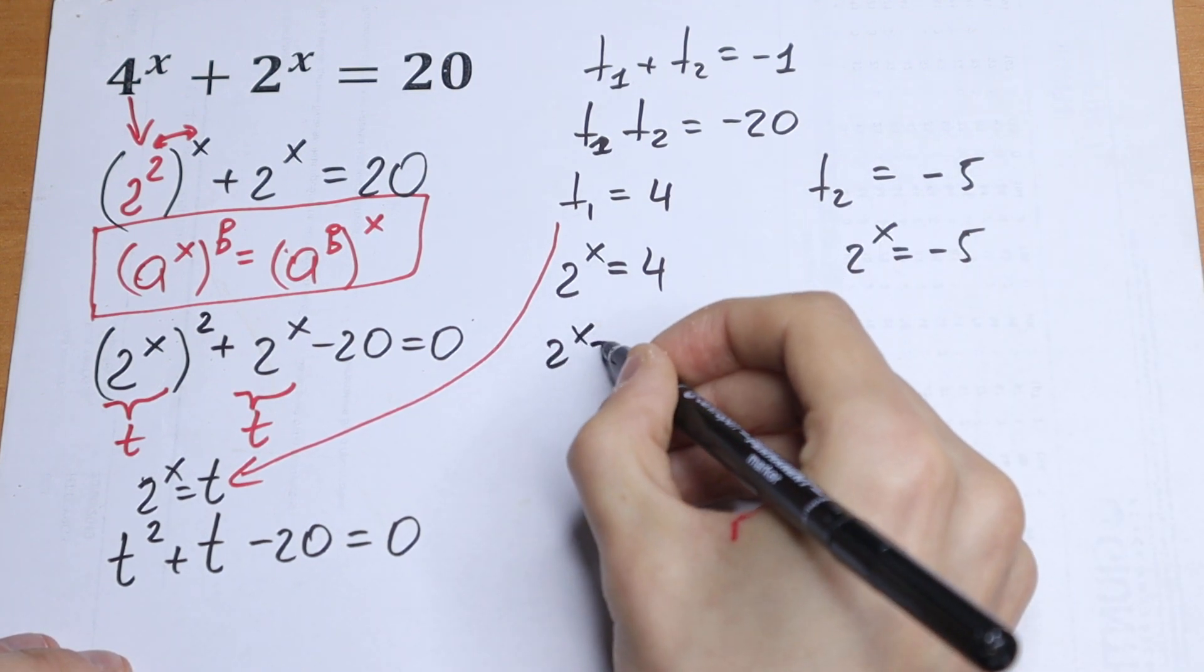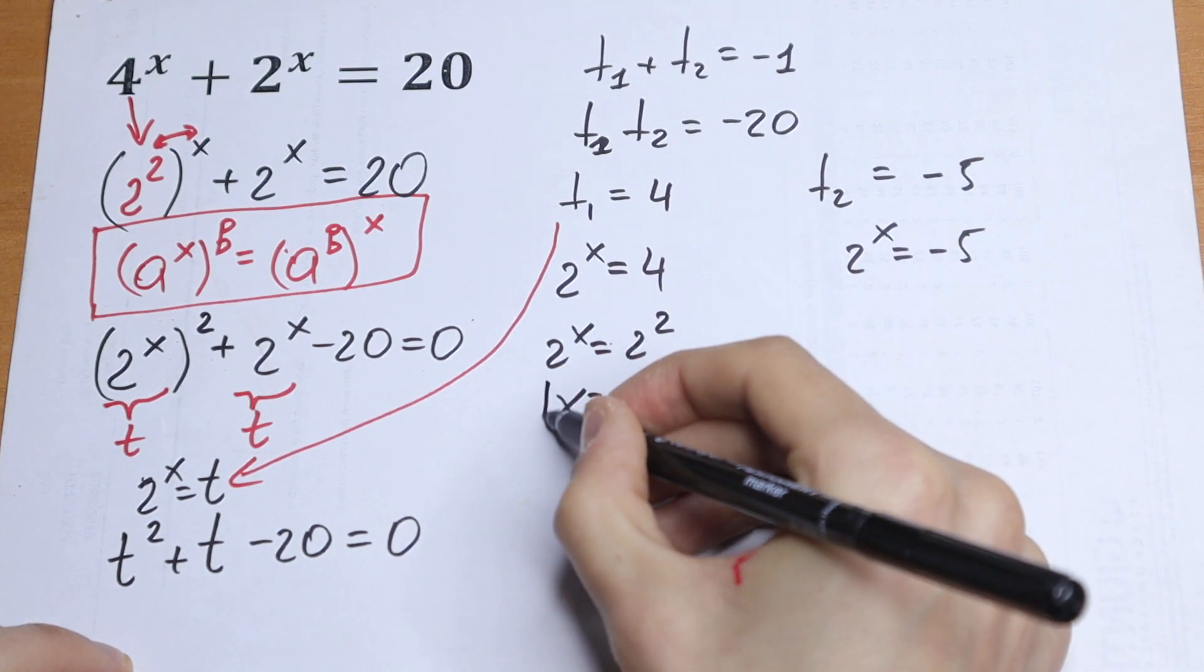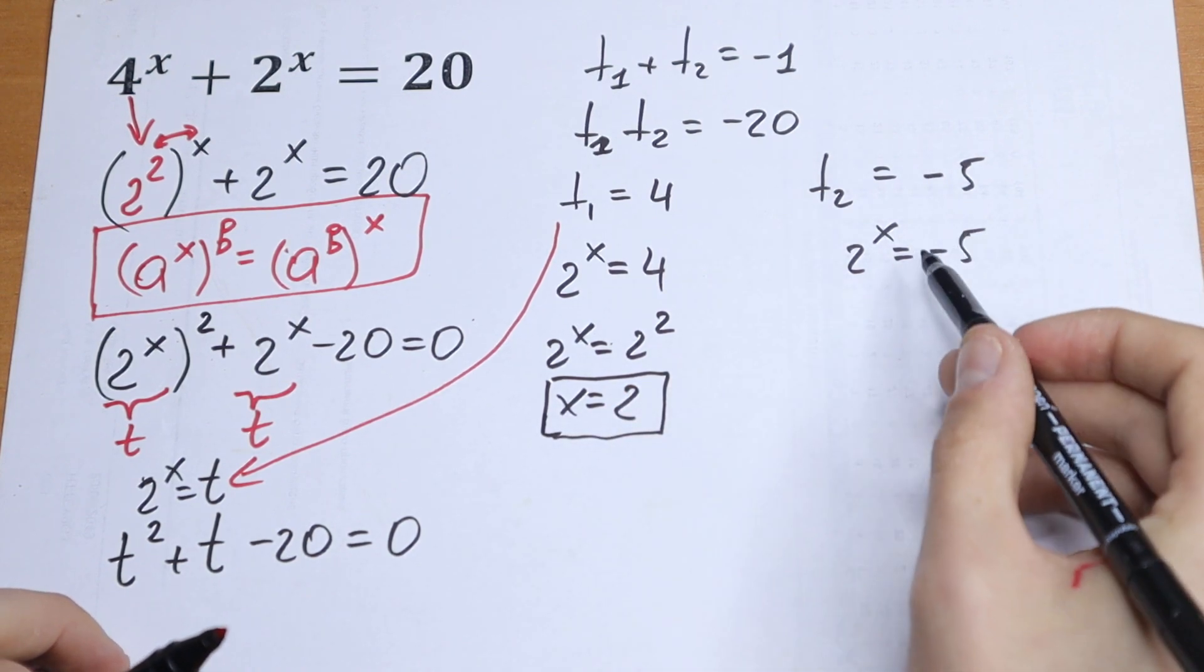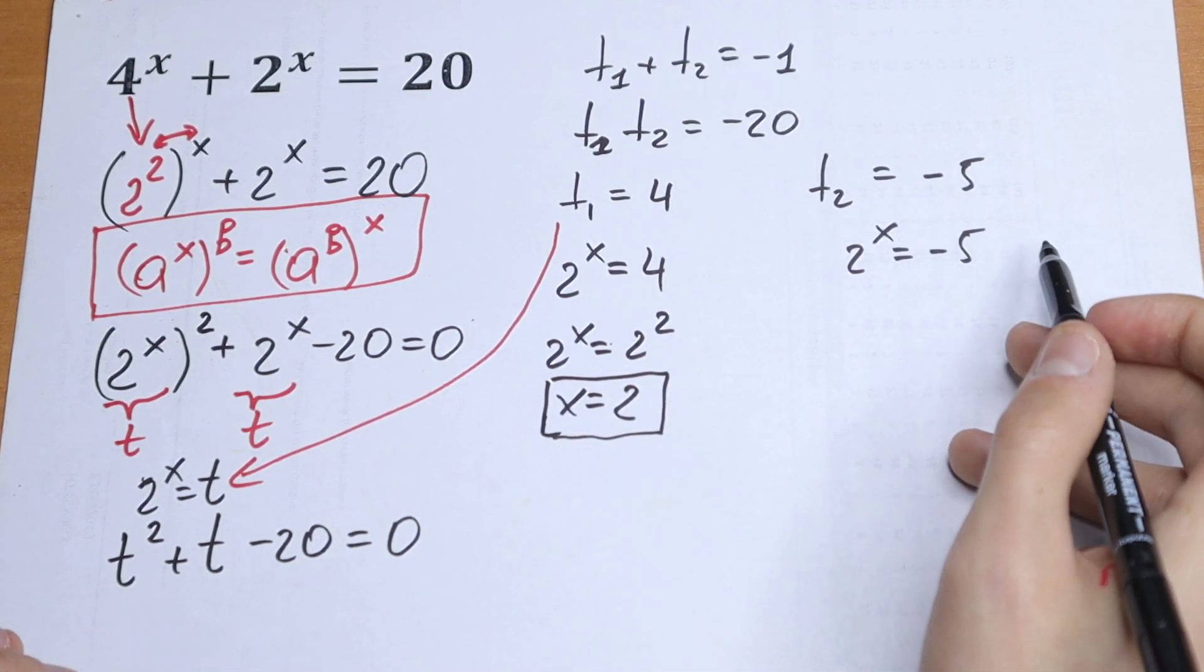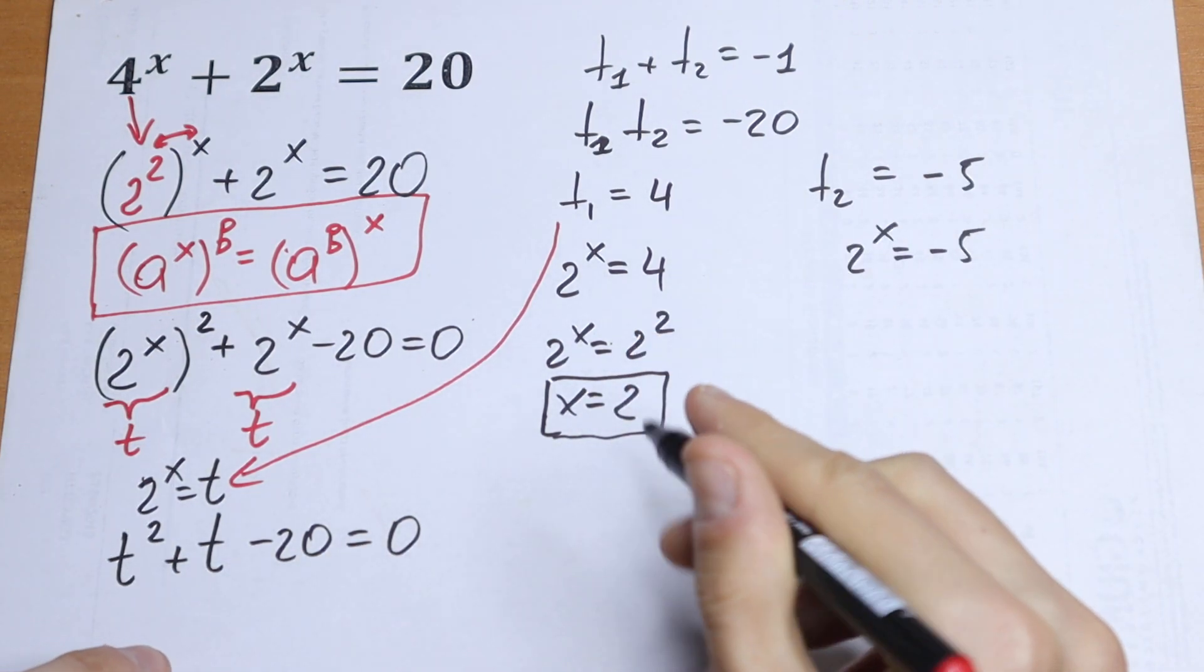And right here, we can write it as 2 to the power x equals 2 squared, and x equals 2. And this is the one and only answer in real numbers. So this is our answer right here: x equals 2.